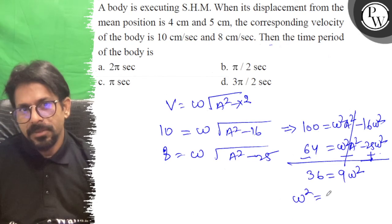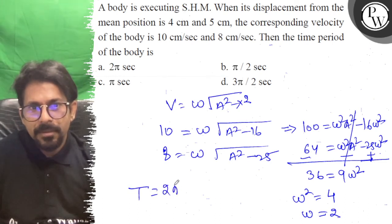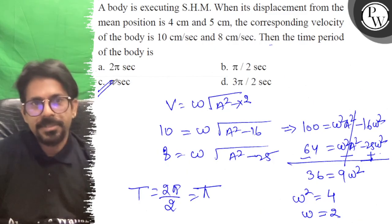So omega squared equals 4, meaning omega equals 2. The time period is 2π divided by omega, which is 2π divided by 2 equals π. Option C is correct. All the best.